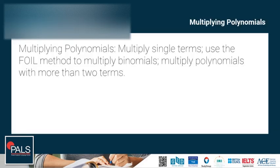In this topic, we will look into multiplying single terms, using the FOIL method to multiply binomials, and multiplying polynomials with more than two terms. The method used depends on the number of terms that make up the polynomials. In all cases, you need to remember how to work with the laws of exponents, how to use the distributive property, and to simplify by combining like terms.